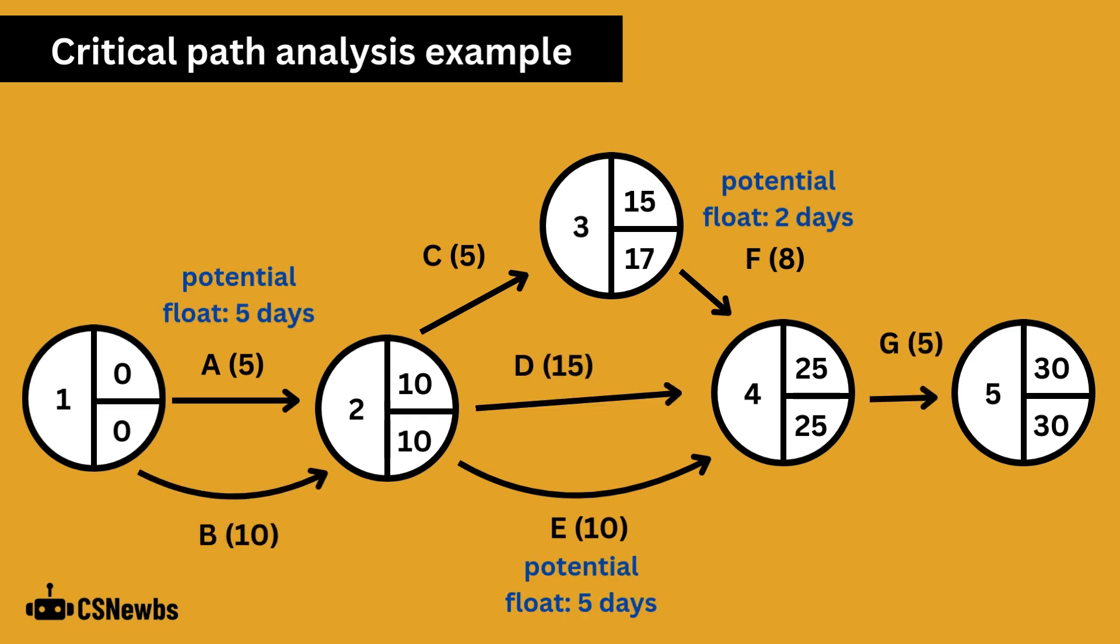We identified the float of two days on node 3 as we were working out the latest finish times, but there's also float on some other activities such as A. Because activity B takes 10 days but activity A only takes 5, and node 2 is dependent on both A and B, there's float of 5 days for activity A. So we could potentially start activity A on day 5 and it would still not delay the overall project. Activity E also has 5 days of float.